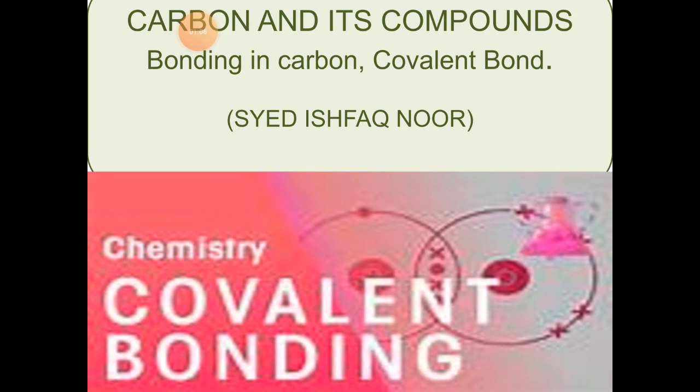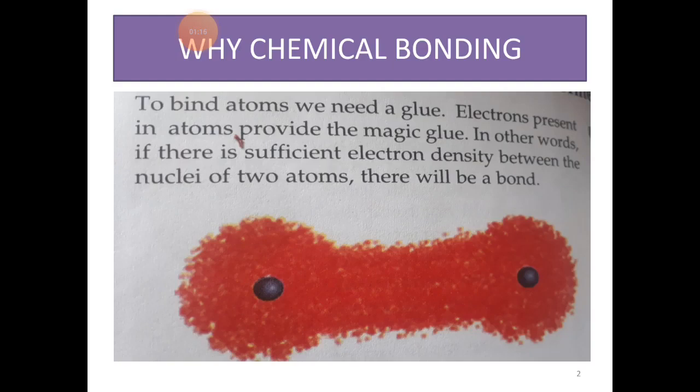They form isomers, they form compounds of same molecular formula, but different spatial arrangement of their constituent atoms. Moving on to our actual topic that is the bonding in carbon. What is the bonding structure in carbon? So before knowing that, we need to understand what is a chemical bond.